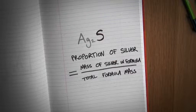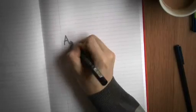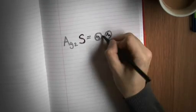And what is the formula mass? Well it's the relative mass of the whole formula, so in this case of Ag2S it's the mass of Ag2 that's two silver atoms plus one atom of sulfur.